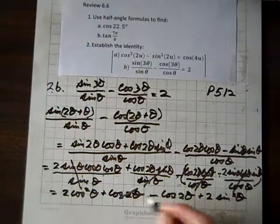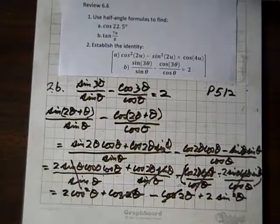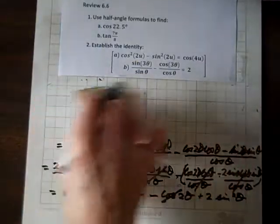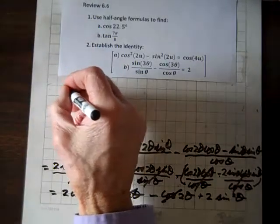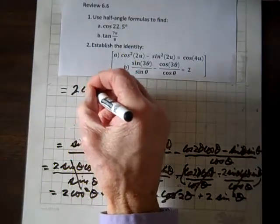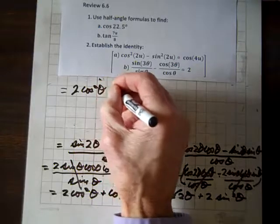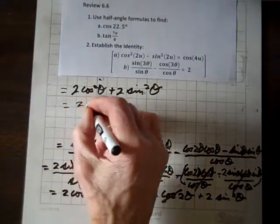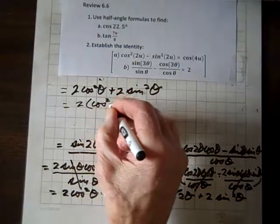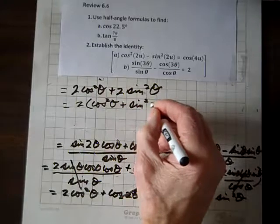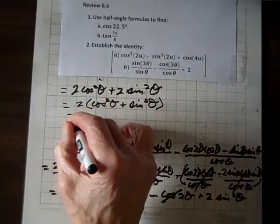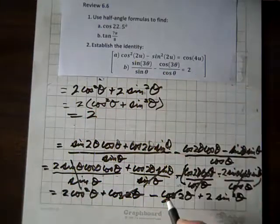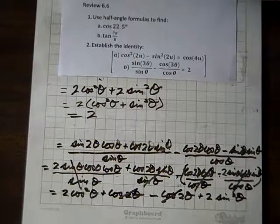Now these two cosine-of-2-theta terms cancel out. And what we have — I'm going to go back up to give myself some room — is 2 cosine squared theta plus 2 sine squared theta, which equals 2 times the quantity cosine squared theta plus sine squared theta. And that's just 1, so that equals 2. And that's what we had to get to — the 2. So we've established the identity.